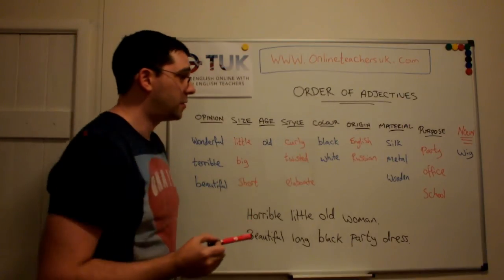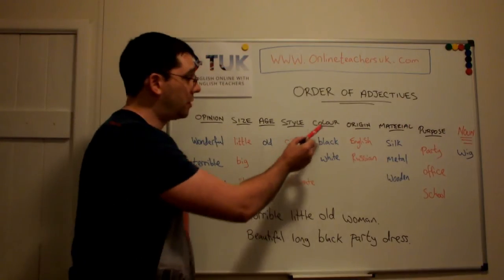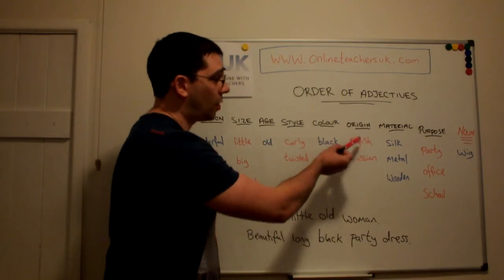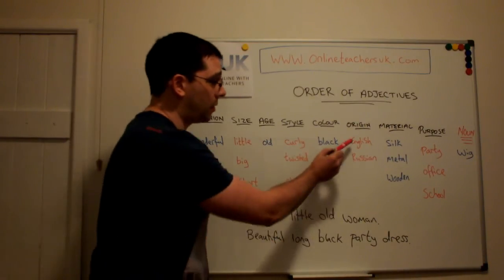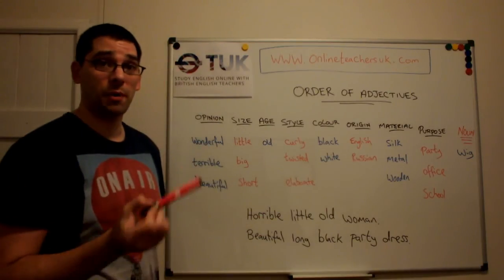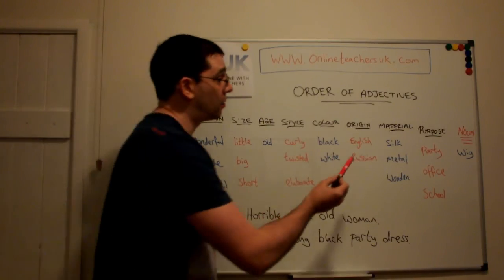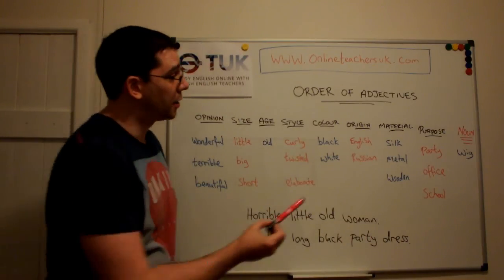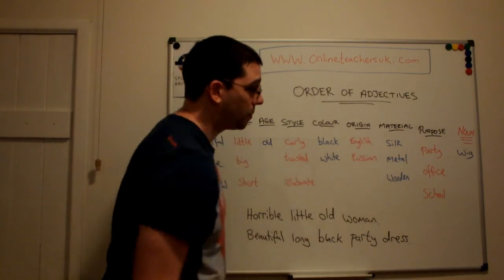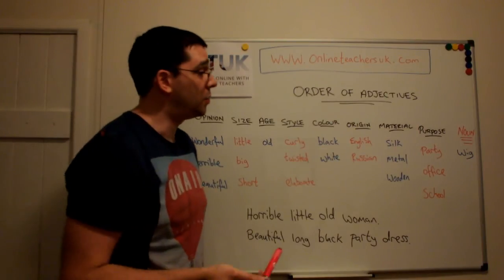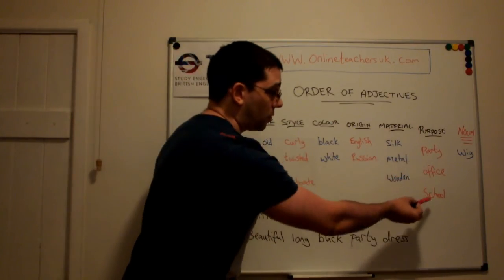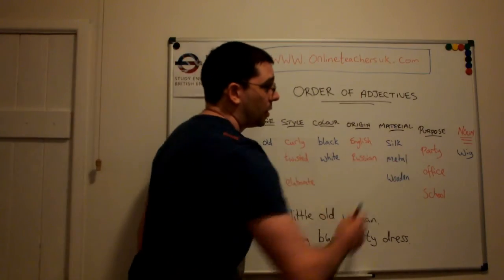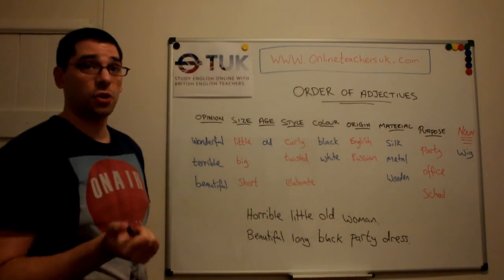We have colours like black and white, blue, whatever colours you want. Origin — so where the thing comes from — it might be English or Russian, or it might be from a city or anywhere else. Material: silk, metal, wooden. And the final one, we have purpose — so what it's intended for, why you would use it. Here you might have 'party' or 'office' or 'school'. And then at the far end you have your noun, just to finish off the utterance.